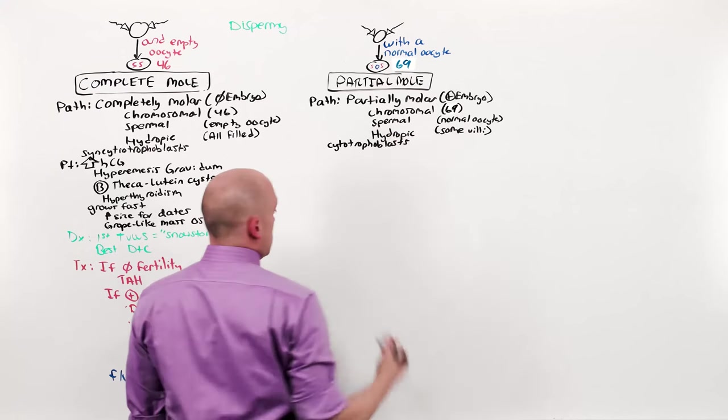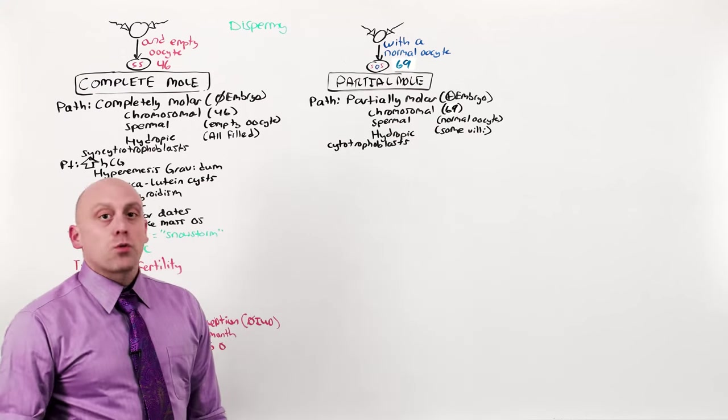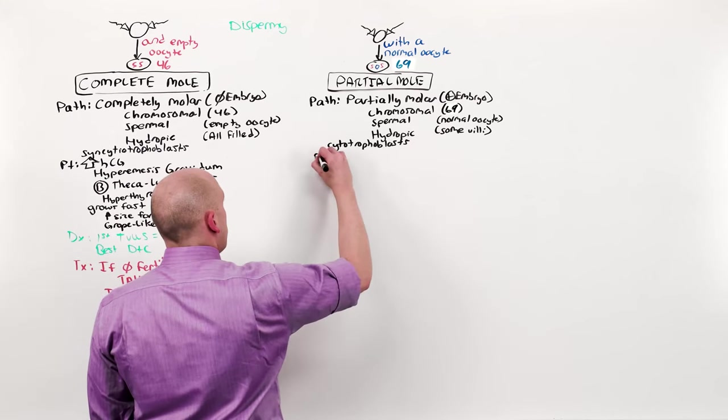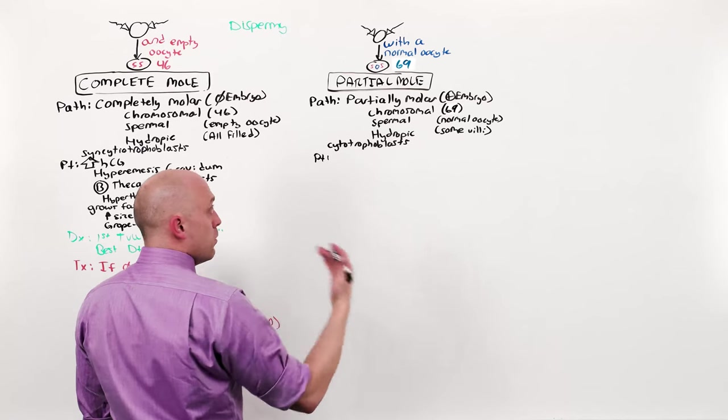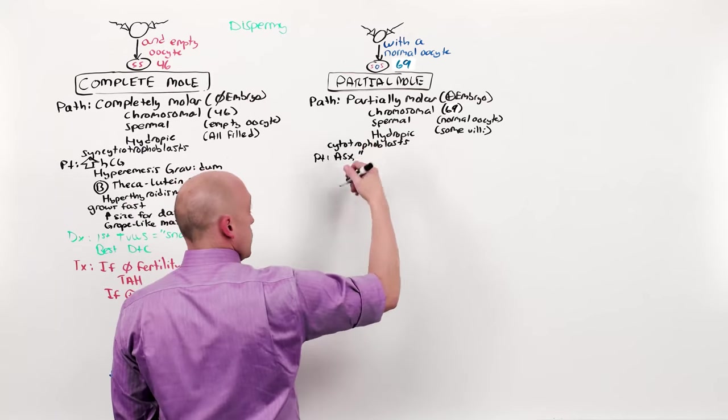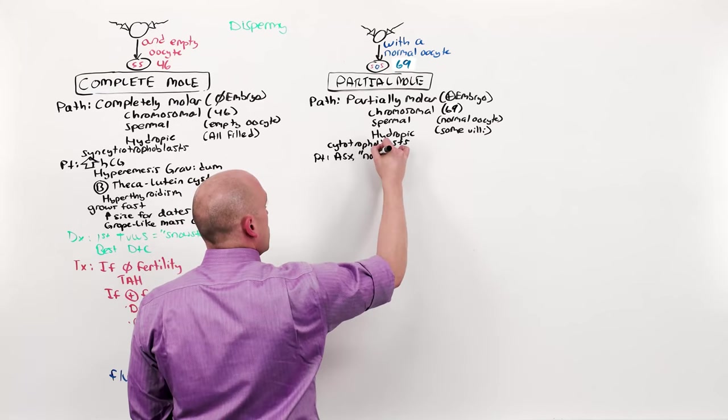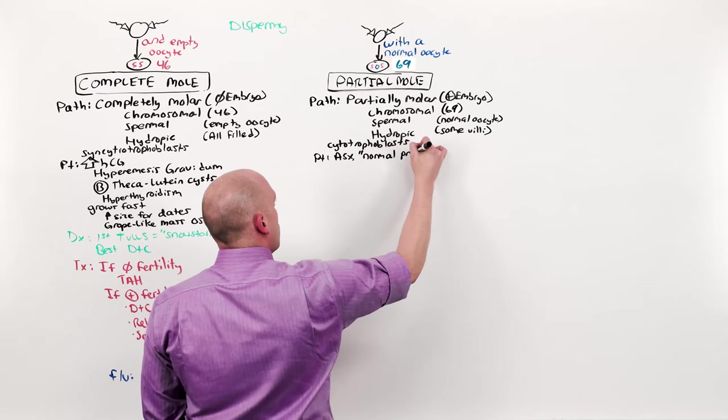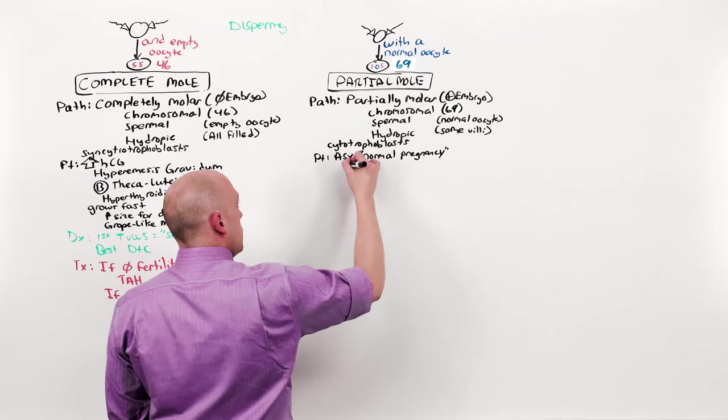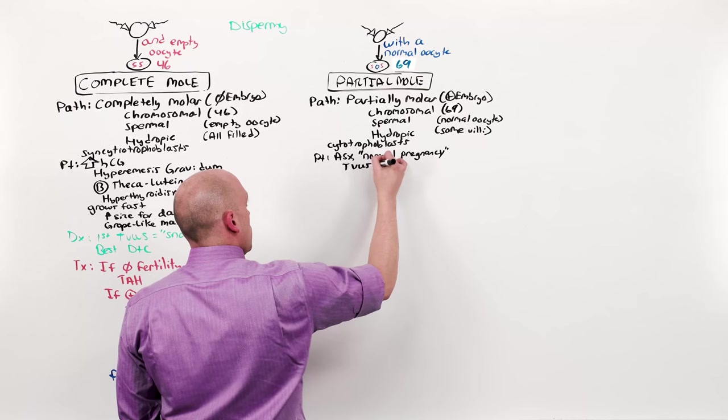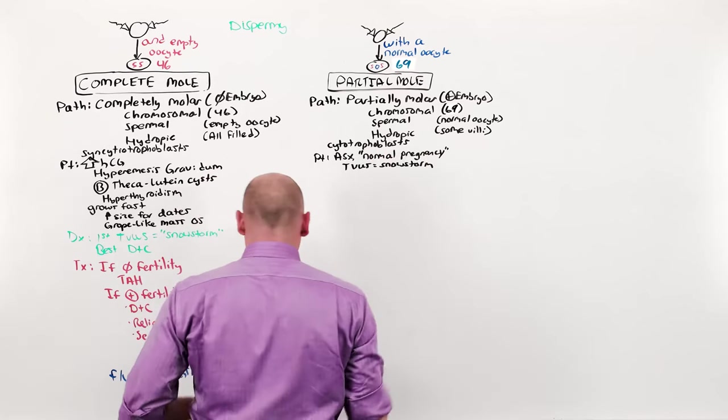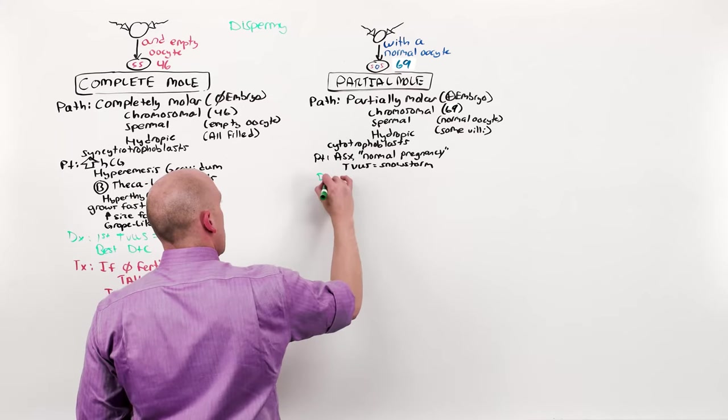Cytotrophoblasts follow the syncytiotrophoblasts. They don't grow quickly and they don't produce HCG. Thus, what you're going to see is a much milder disease. It's going to be asymptomatic and the woman is going to believe that she's experiencing a normal pregnancy. But when she goes in for her first ultrasound, the ultrasound is going to show a snowstorm. The diagnostic steps and the treatment are essentially the same.